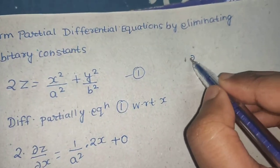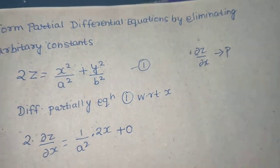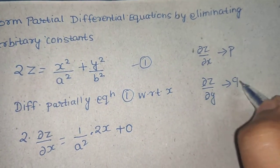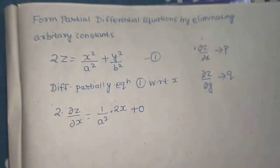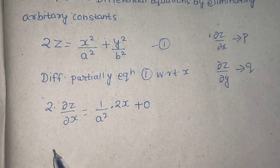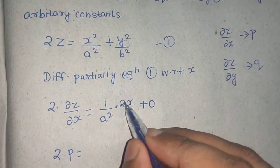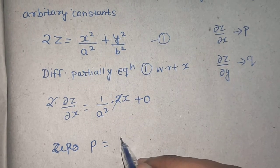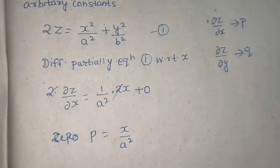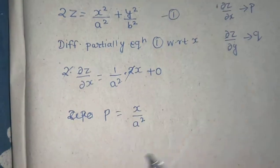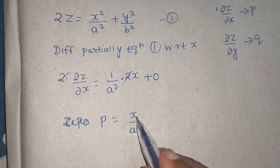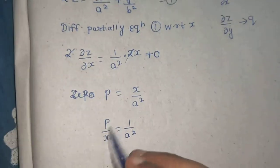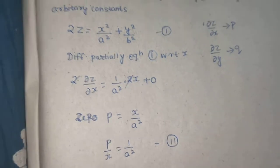Some of you want to write del z by del x as p, and del z by del y as q. If you want, you can use p and q; if not, let it remain as is. So let's replace this: after cancelling the 2, p equals x divided by a-squared. Since we have 1 upon a-squared, let's take x to the other side, giving p by x equals 1 upon a-squared. Let this be equation number 2.